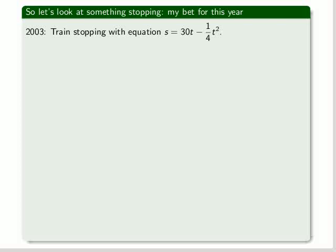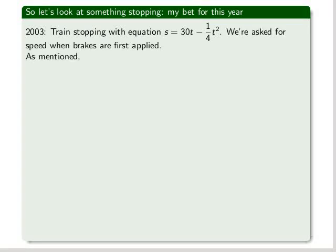So let's just look at one of these equations, or sorry, one of these questions. My bet is that 2009 will see a stopping type movement, so we're going to look at 2003. That was a train stopping, with the equation 30t minus 1 quarter t squared. We were asked for the speed when the brakes are first applied.